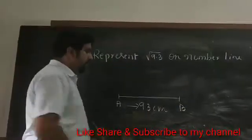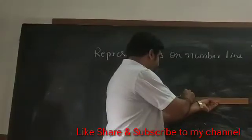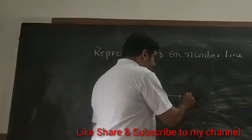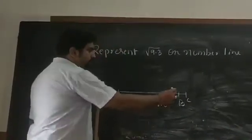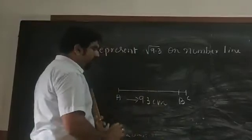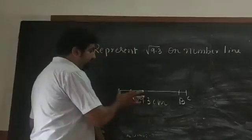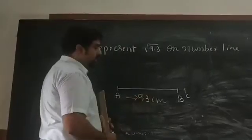This is the first step. Then, take 1 cm extra. Take 1 cm more and mark the point as C. After marking 1 cm, you have to draw a line bisector of AC to draw a semicircle.